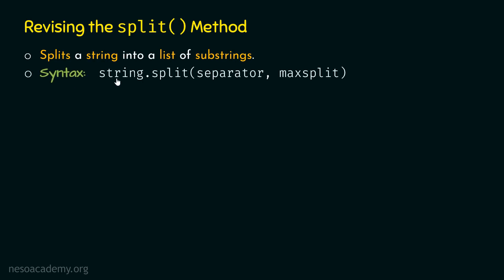The syntax is very simple. We first provide the string, then dot, then split. To the split method, we can provide two arguments. The first argument is the separator, which tells the split method where to split — it can be a whitespace character, a comma, or any other character. The default value of the separator is any whitespace character. The second argument is maxSplit, which tells the split method the maximum number of splits it can perform. The default value is minus 1, meaning the split is performed at every occurrence of the separator.